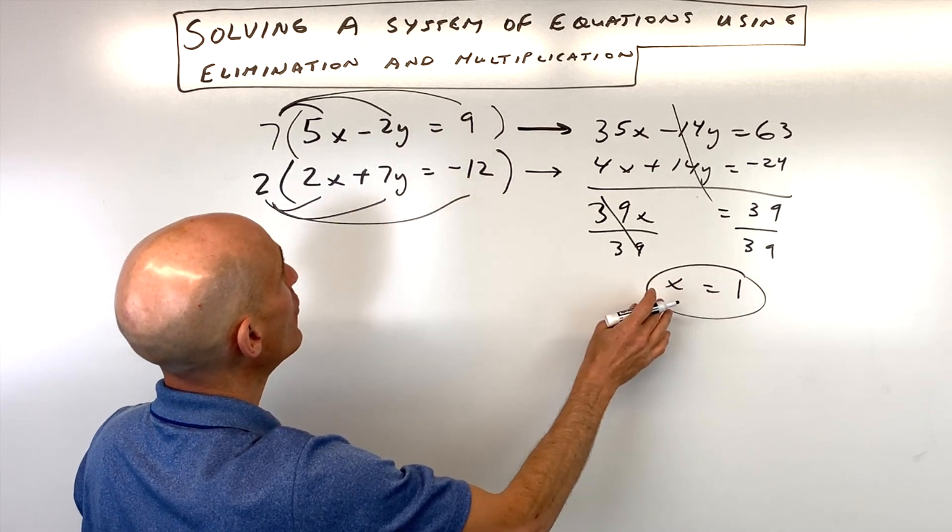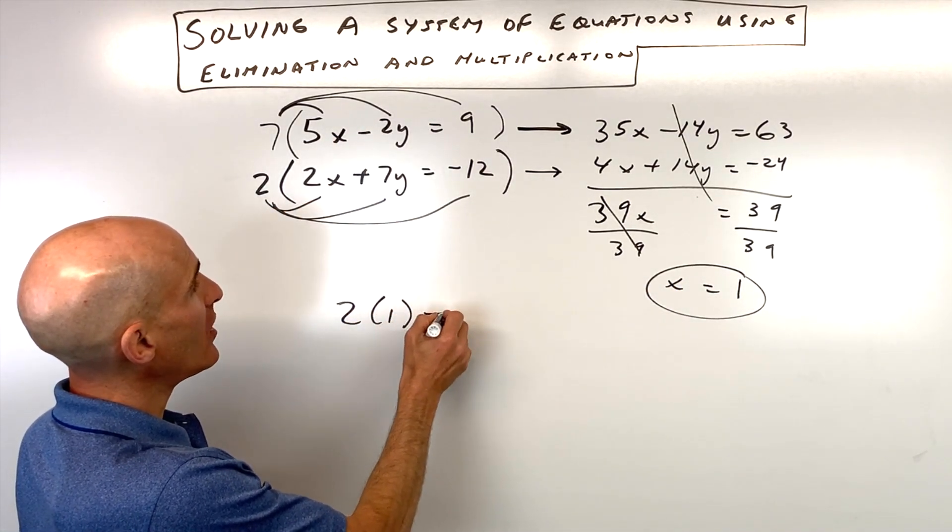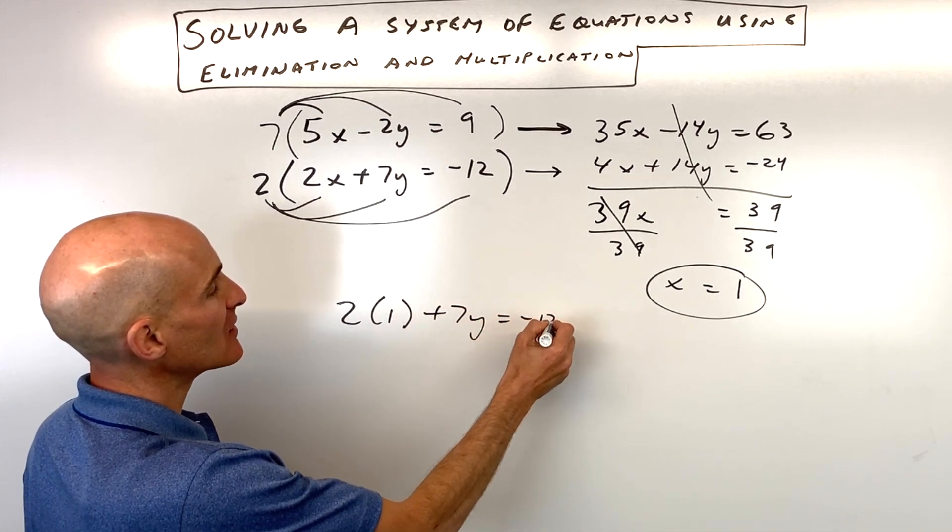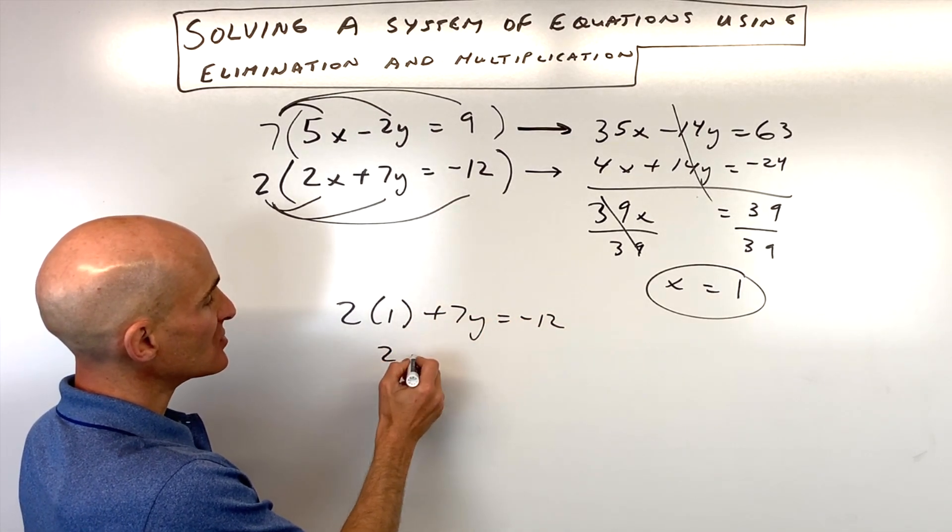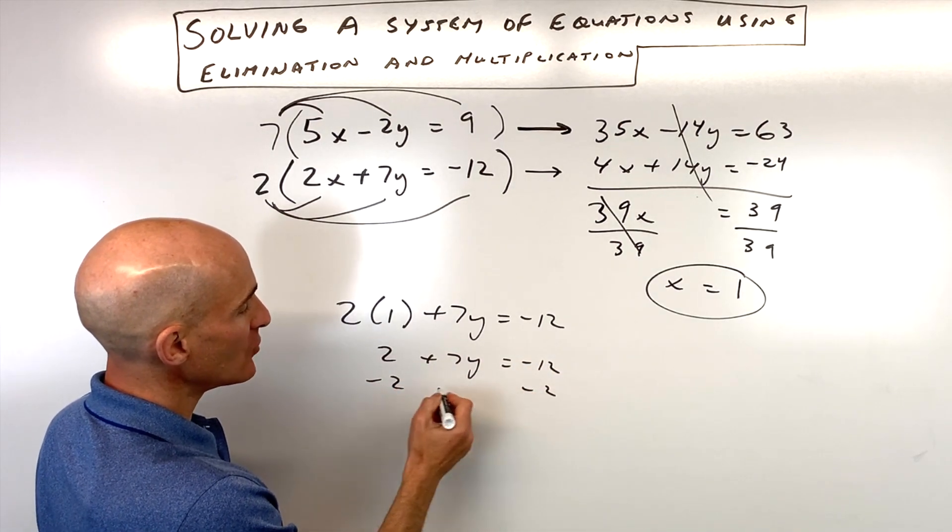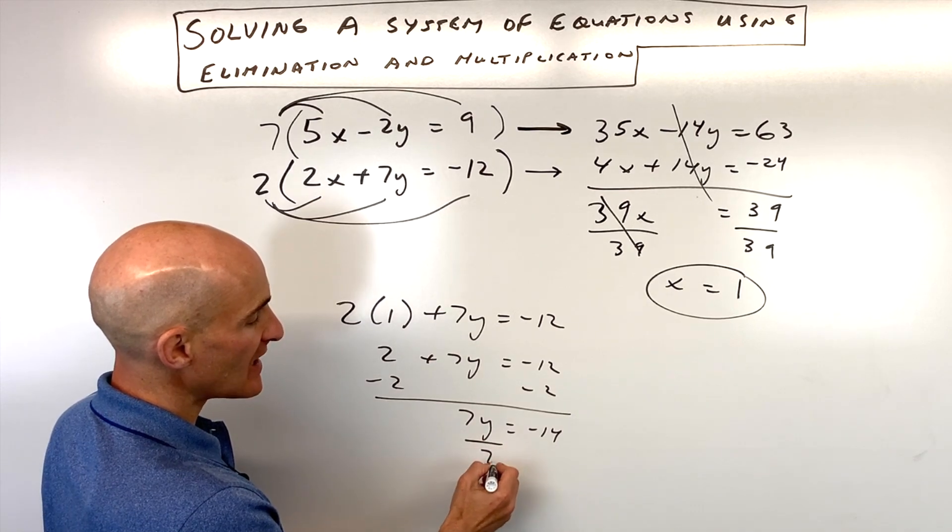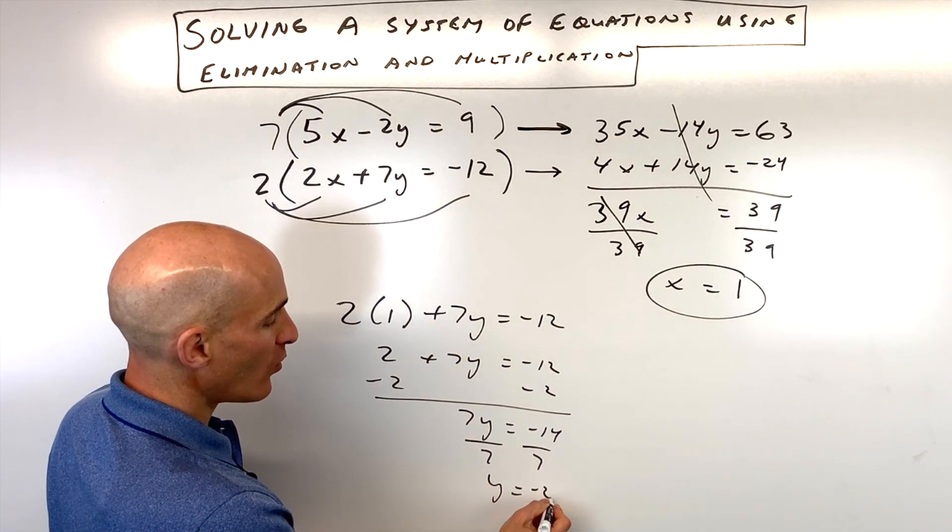Now if we take the 1 and we can put it back into either equation, I'm going to put it into the bottom one. So that's going to be 2 times 1 plus 7y equals negative 12. So this comes out to 2 plus 7y equals negative 12. Subtract 2 from both sides of the equation. That gives us 7y equals negative 14. Divide both sides by 7, and you can see that y equals negative 2.